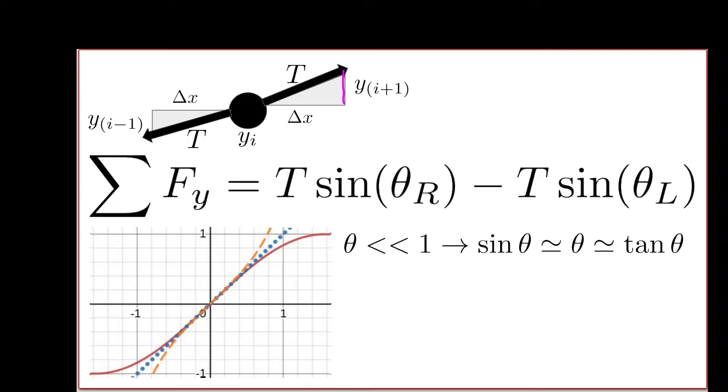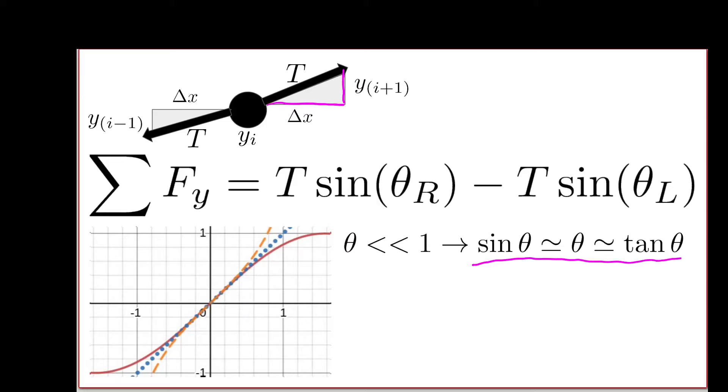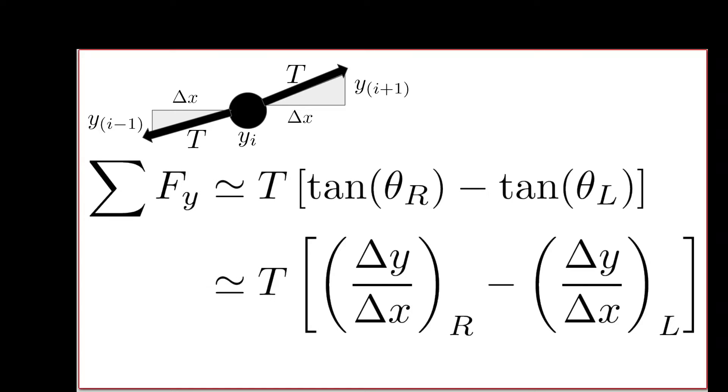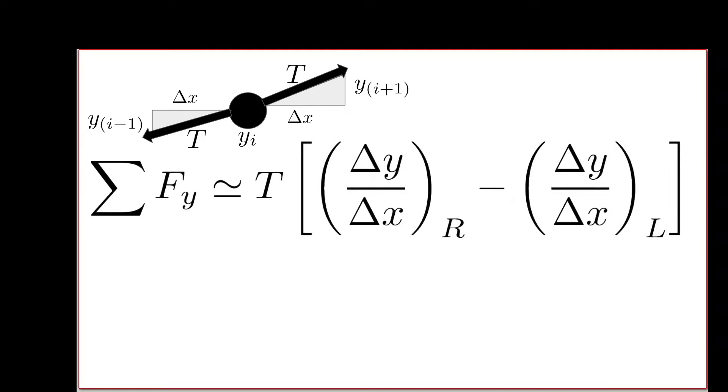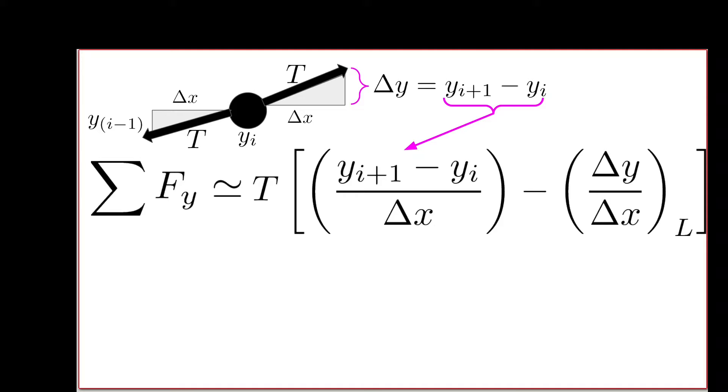Tangent is the opposite over adjacent, so that is the rise over run. This gives us a way to think about slope in relation to the force. Let's substitute this relationship that sine theta approximately equals tan theta into our equation. Tangent theta on the right is the ratio of delta y over delta x. Notice that this distance highlighted in pink, delta y on the right, is y sub i+1, the height of the particle to the right, minus y sub i, the height of our middle particle. We can substitute this into our equation.